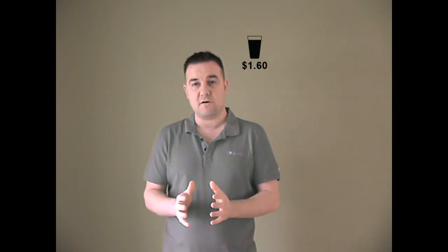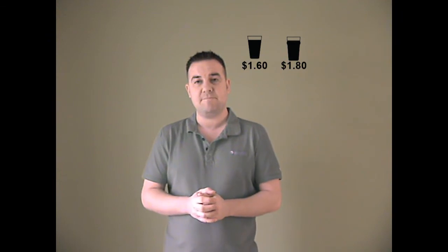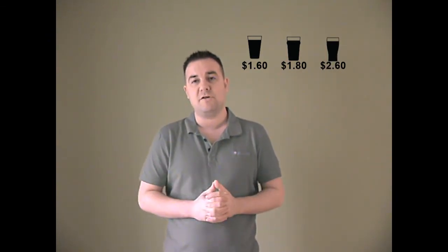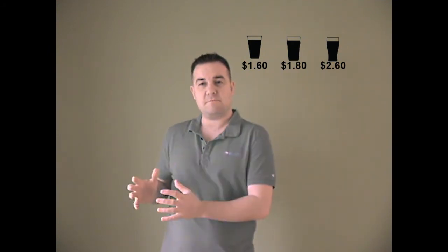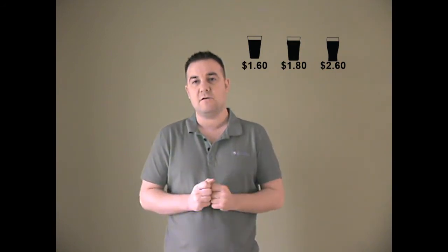So the first experiment, what they did was they added a super budget can and they charged $1.60 for this super budget. They still had the bargain one at $1.80 and they still had the premium one at $2.60. Now, suddenly what happened is nobody bought the new super budget that they brought in. But what the new super budget did is it moved some people, some of that 66% from the premium down to the budget.